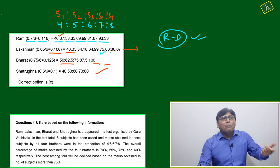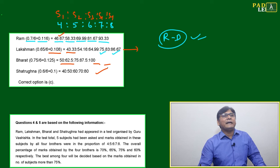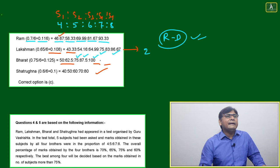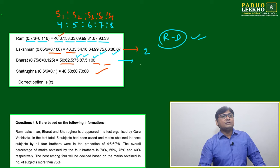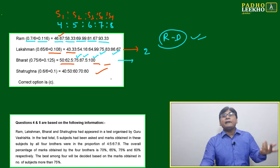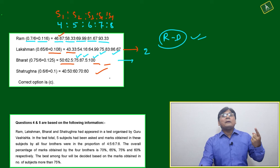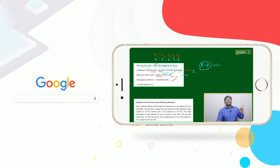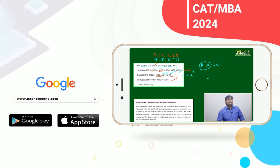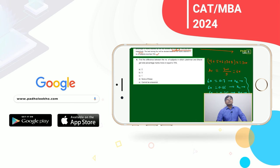For Lachman, the scores at the border are 75.83 and 86.67 — calculate exactly because approximation here might give 74-point-something and you'll miss the count. So Lachman gets ≥75% in two subjects: 75.83 and 86.67. For Bharat, scores are 50, 62.5, 75, 87.5, and 100. Bharat is excellent — he is the only person who got 100 in subject 5. Bharat gets ≥75% in three subjects. The difference is three minus two = 1.